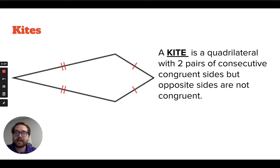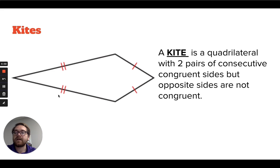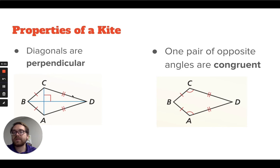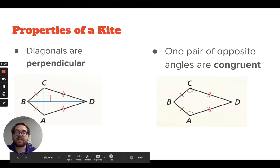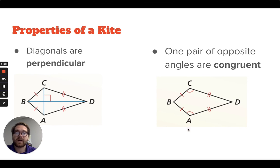The last figure we'll look at is a kite. A kite is a quadrilateral with two pairs of consecutive congruent sides, but the opposite sides are not congruent. This side is congruent to that side, and this side is congruent to that side — two pairs of consecutive congruent sides. The properties of a kite are: the diagonals are perpendicular, meeting at a 90-degree right angle; and one pair of opposite angles are congruent — just one pair, not both sets.